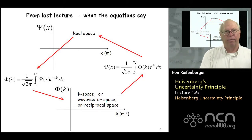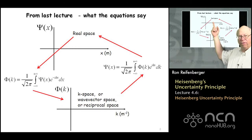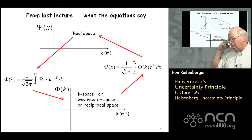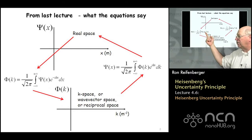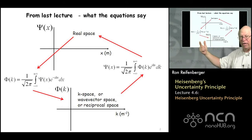By way of summary, if we go back to the last lecture, we made extensive use of Fourier transform pairs. These allow us to take a function in real space and transform it to a wave function in k-space, and conversely, if we know phi of k we can get back to psi of x by performing the inverse transform. The mathematics requires evaluating an integral over all space, picking a value of k to insert so that you get a value of phi for that particular k value.